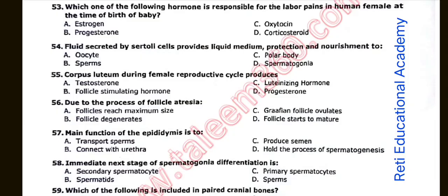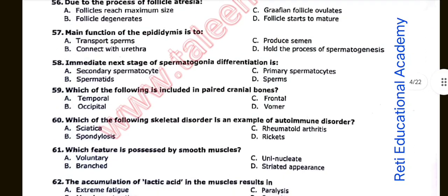Question number fifty-six: Due to the process of follicle atresia. Option B is correct: Follicle degenerates. Question number fifty-seven: Main function of the epididymis is to. Option A is correct: Transport sperms. Question number fifty-eight: Option A is correct: Primary spermatocytes. Question number fifty-nine: Which of the following is included in paired cranial bones? Option A is correct: Temporal.